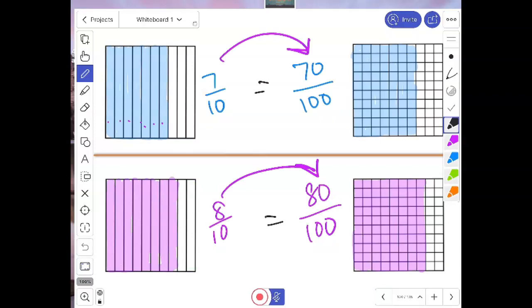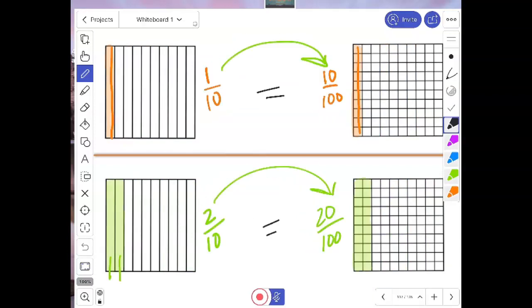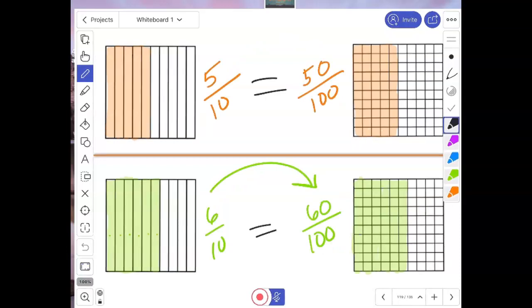So take a look at those all for a second. I am going to go back to the beginning. One tenth, ten hundredths. Two tenths, twenty hundredths. How about five tenths? Fifty hundredths.